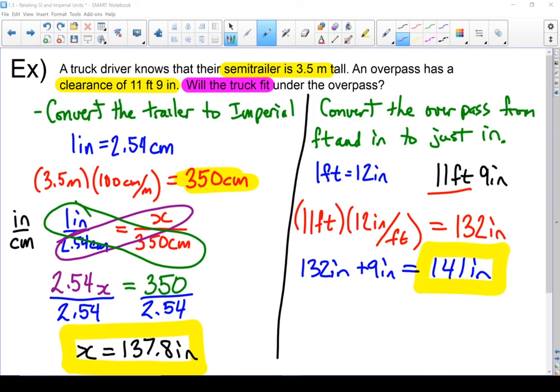I've done all my conversions but I haven't actually answered the question. It's important to end this with a sentence that actually answers it. Will the truck fit? So if I look over here my truck is 137.8 and my overpass is 141. So technically yes the overpass is taller than the truck but it's only just over three inches taller. I'm not sure I would take the risk but yes it will fit.